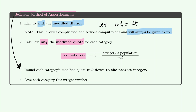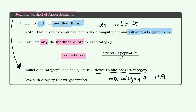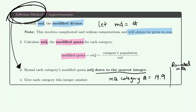You then need to round each category's modified quota down to the nearest integer. For instance, if the MQ for one category was 14.9, the Jefferson method requires rounding down to 14 — even though 14.9 would normally round up to 15 in other circumstances. Everything rounds down to the previous integer, and you give each category that integer number.